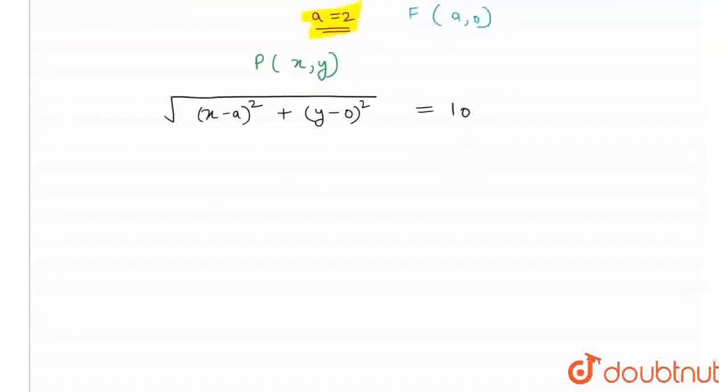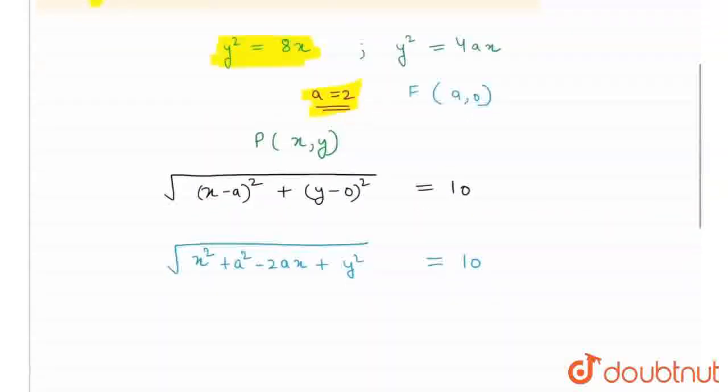Therefore, by solving this, it would be x square plus a square minus 2ax plus y square whole under root, and we know that y square is equal to 4ax.